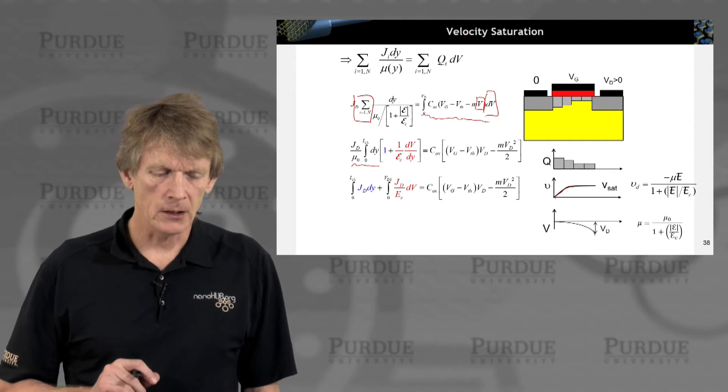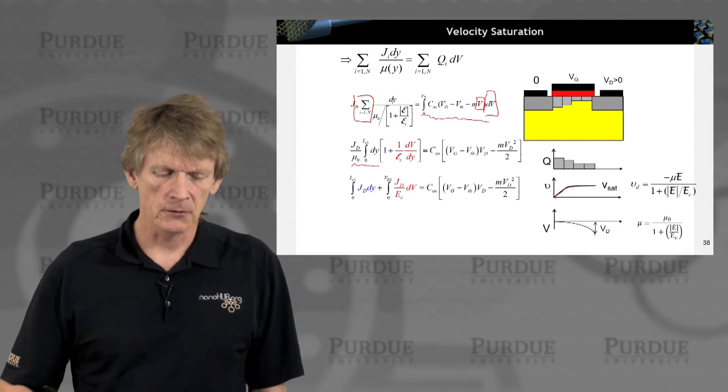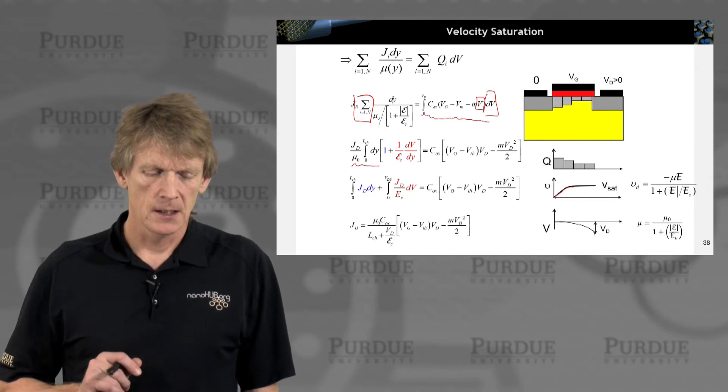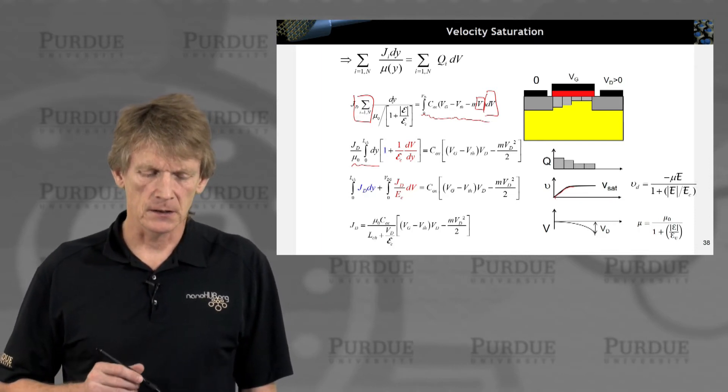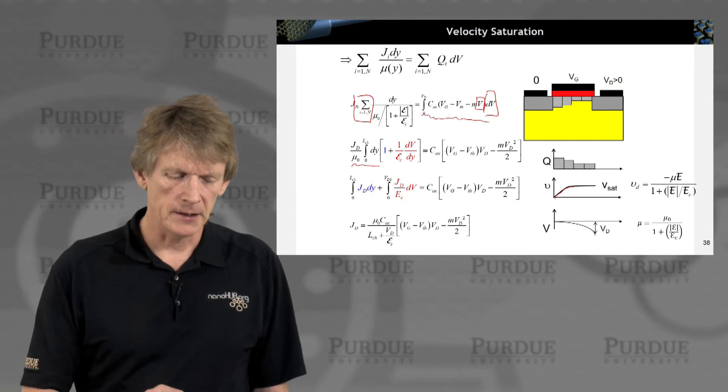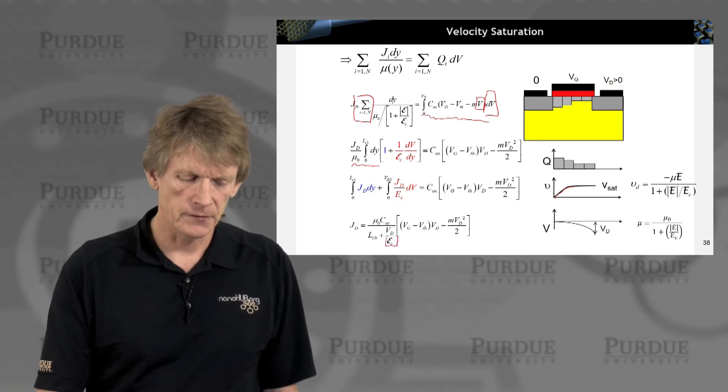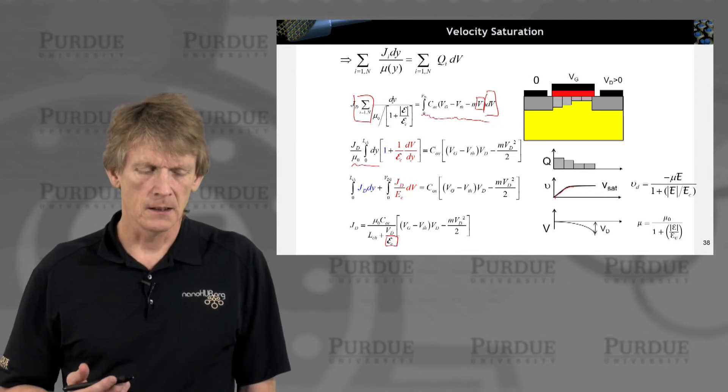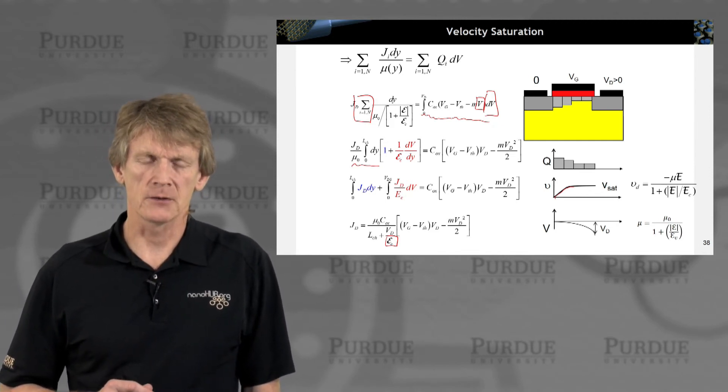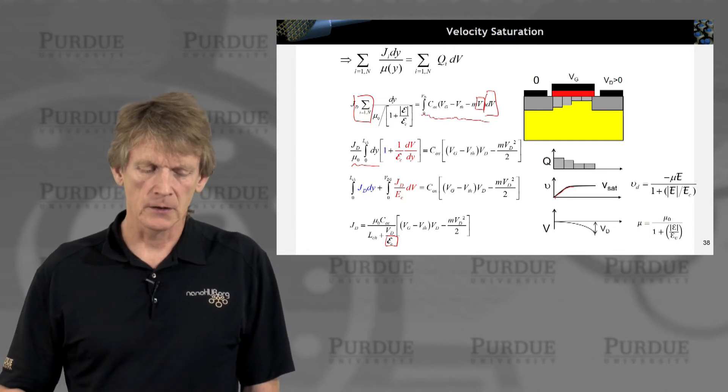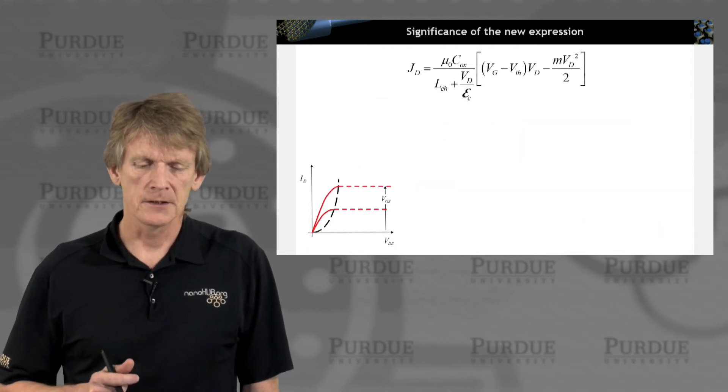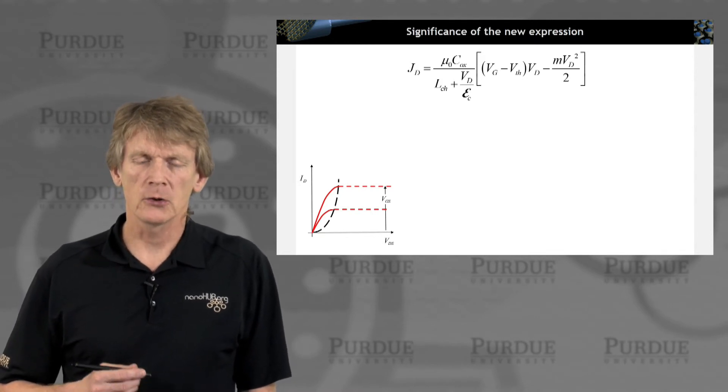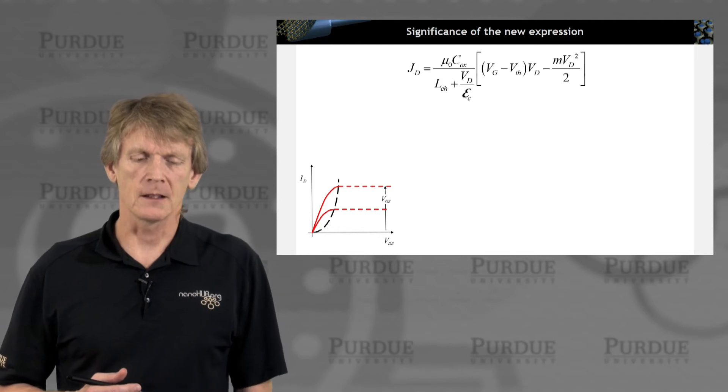Now we split out this double integral, one is a function of distance, the other is a function of voltage. And you get an expression that's a little bit more lengthy, but it has the critical electric field at which the carriers will be saturated, built in. So now you have a new JD that now has the critical field in it. And we can look at this expression in a little bit more detail.